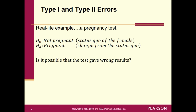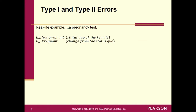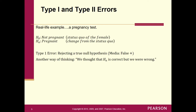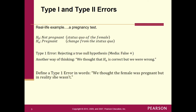A Type 1 error is rejecting a true null — the media calls that a false positive. We thought the alternative was correct but we were wrong. In this context: based on the test, we decided to reject the null, so we thought the female was pregnant — but in reality she wasn't. That's how you'd define a Type 1 error in words for this problem.